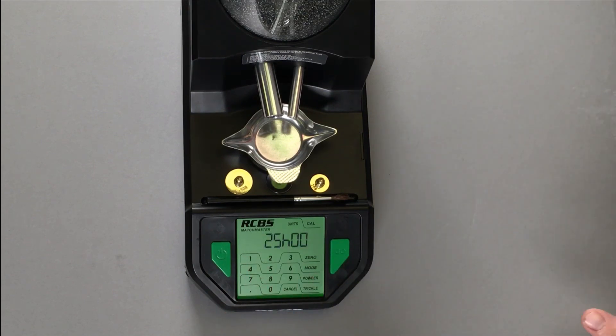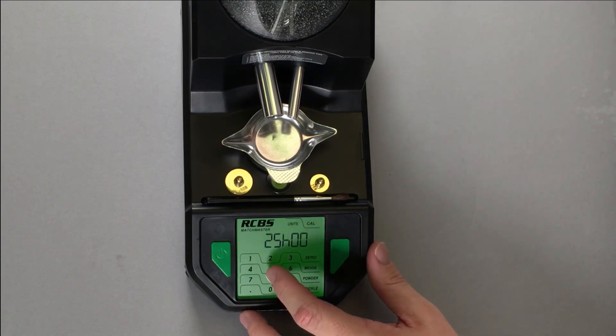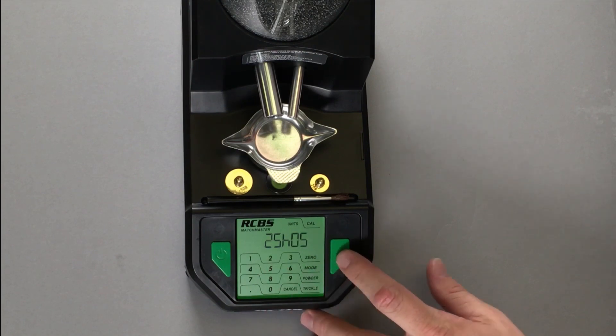The H value. H is the setting where you control where the long trickle operation stops and the short trickle operation starts. Each division equals 0.02 grains with a range from 1 to 99. For example, you want the short trickle to start at 0.10 grains from the target. You would have H equals 5. 5 times 0.02 grains equals 0.1 grains. Let's set that to 5.